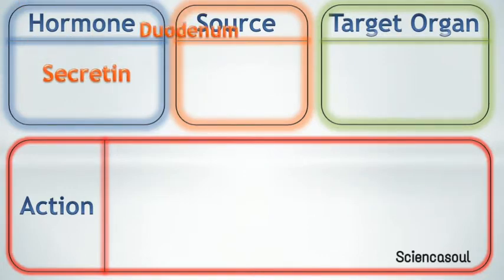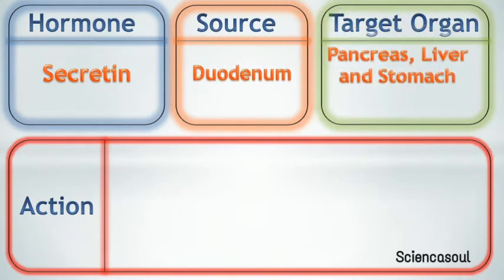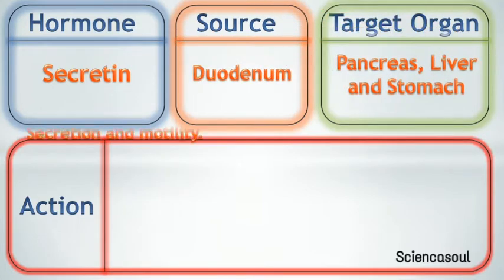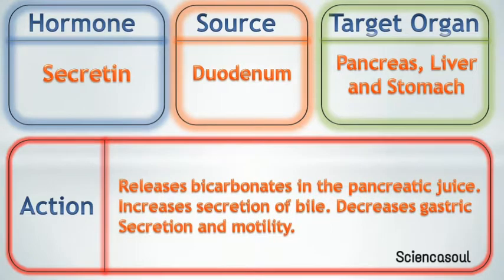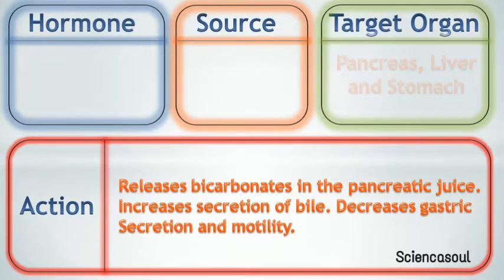Third hormone is secretin, and this was the first hormone discovered by scientists. Source of secretin is the duodenum. Target organ of secretin is the pancreas, liver, and stomach. Action of secretin is to release bicarbonates in the pancreatic juice, increase secretion of bile, and decrease gastric secretion and motility.